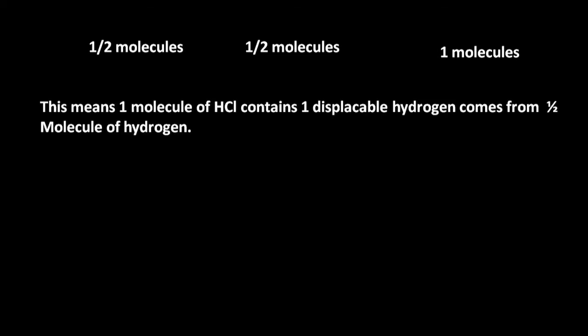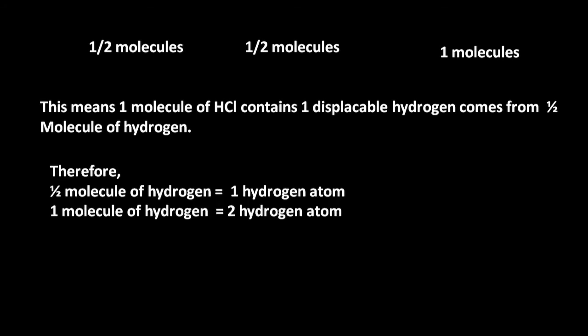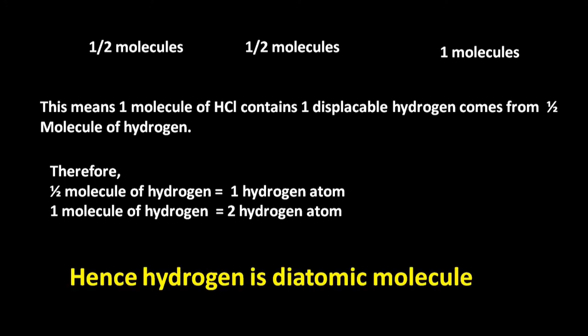This means 1 molecule of hydrogen chloride contains 1 displaceable hydrogen atom, which comes from half a molecule of hydrogen. Therefore, half a molecule of hydrogen equals 1 hydrogen atom, and 1 molecule of hydrogen equals 2 hydrogen atoms. Hence, hydrogen is a diatomic molecule.